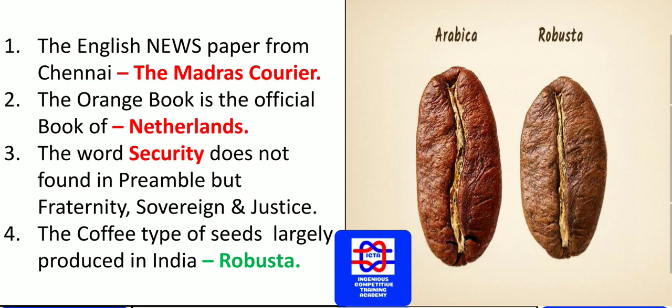The word 'security' is not found in the Preamble of the Indian Constitution. The Preamble includes fraternity, sovereignty, and justice, but not security. In India, the Robusta type of coffee seeds is found, whereas in Brazil, Arabica and other varieties are found.